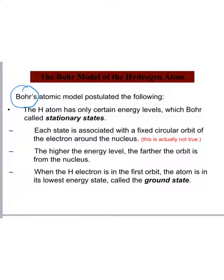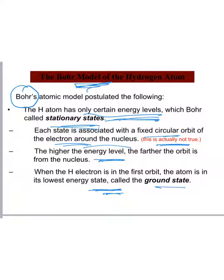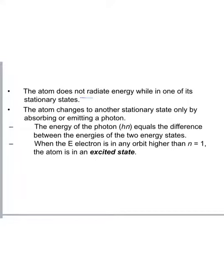What Bohr predicted was happening, or proposed, that's why we call it a model. Bohr proposed that the hydrogen atom only had certain energy levels. So he applied the idea that quantization was running things. He called them stationary states. He said each state is associated with a fixed circular orbit of the electron, kind of like planets around the sun. Now we've learned since then that that's not actually true. However, the rest of it is kind of true. Electrons at higher energy orbitals, or higher energy levels, tend to be further from the nucleus than the ones with the lower energy levels. When the electron is in the very first state, he called it the ground state. The atom does not radiate energy while it's in a stationary state, but it does emit energy when it transfers from one state to another.